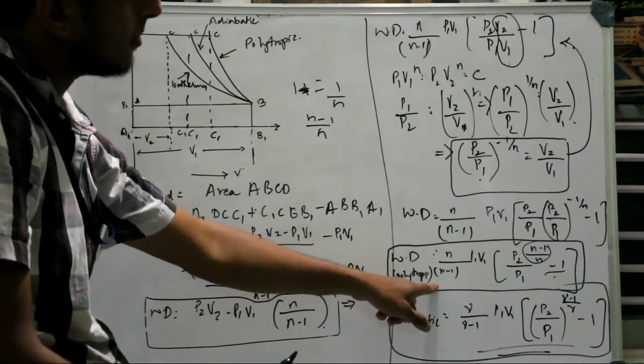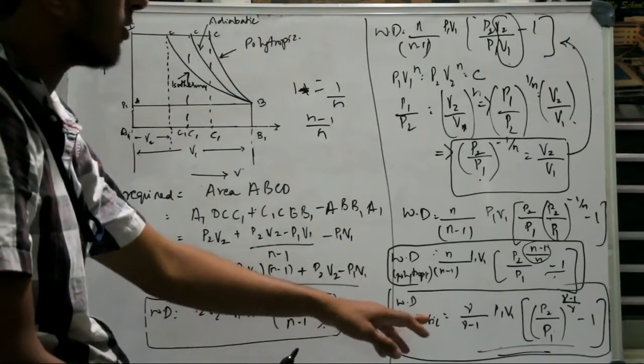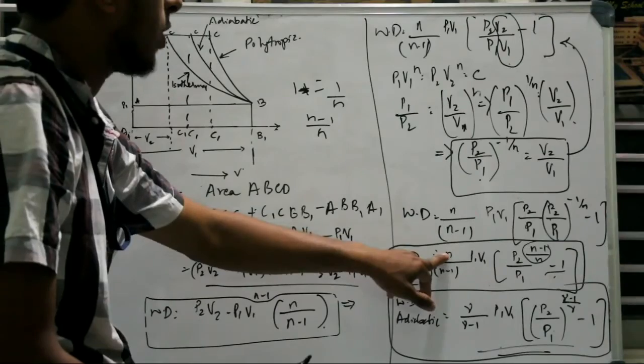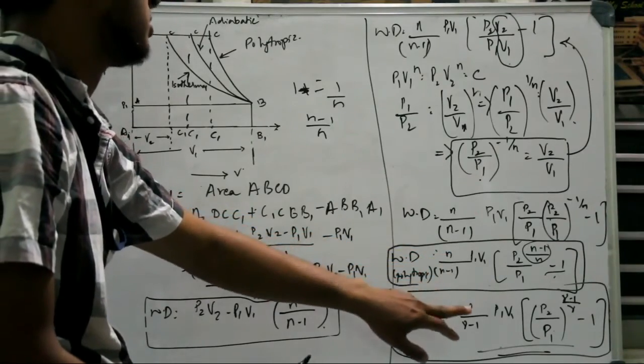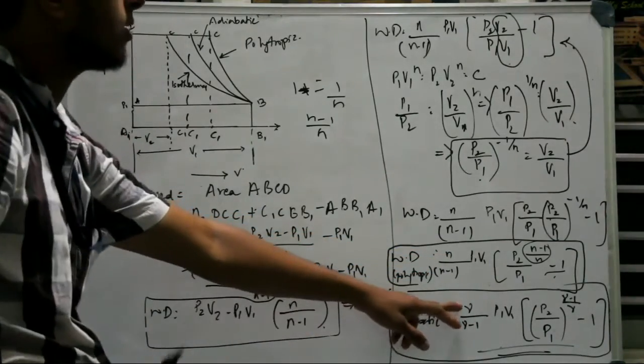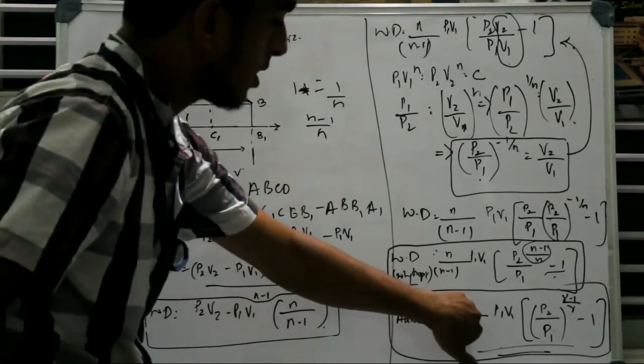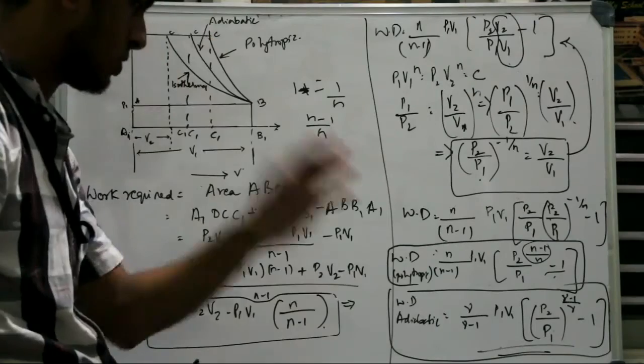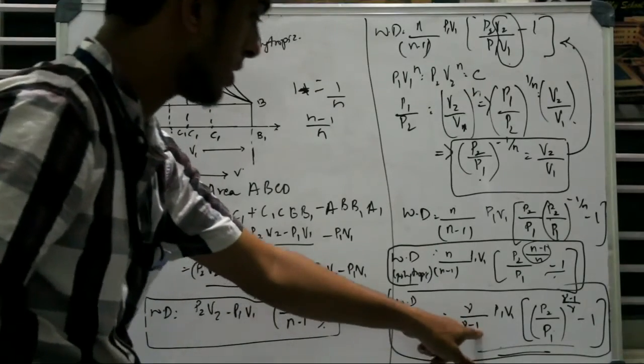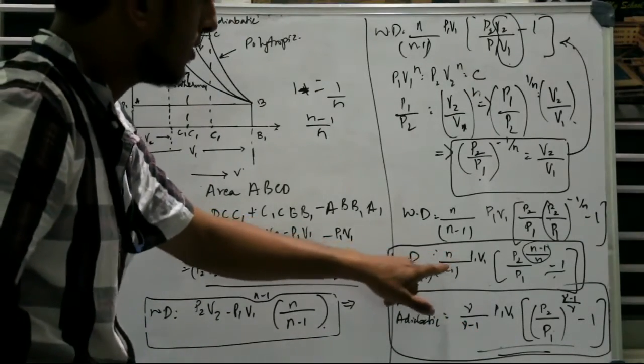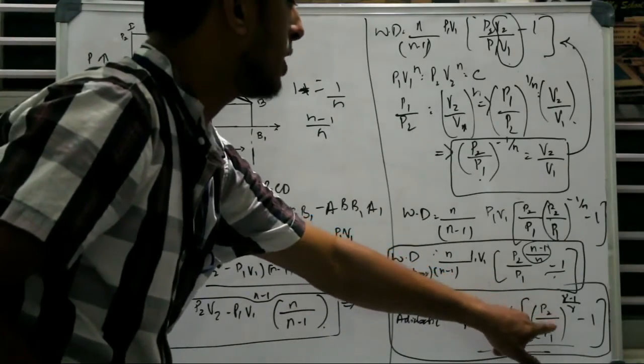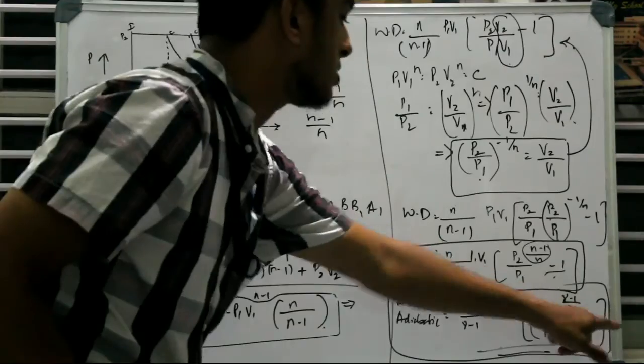The same expression stands even for adiabatic process, except that the polytrophic index is replaced by the adiabatic index gamma. Gamma that will be equal to 1.44 here. So the expression for work done under adiabatic process is going to be, replace N by gamma. So it will be gamma by gamma minus 1 into P1 V1 into P2 by P1 to the power gamma minus 1 by gamma minus 1.